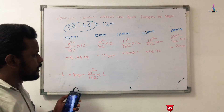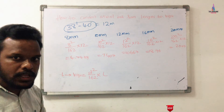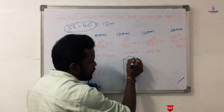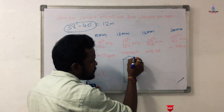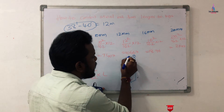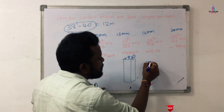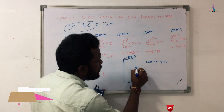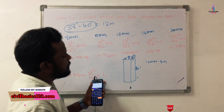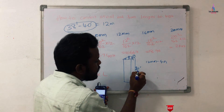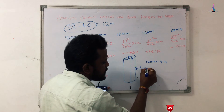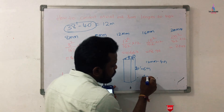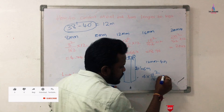Now I will explain a simple example. Consider a column with dimensions of 9 inches × 9 inches as per the codal provision. For this section, I require 4 bars of 12 mm diameter. The length of the column, just for this example, I am taking as 20 feet. Converting 20 feet to meters gives approximately 6 meters as the length of the column.